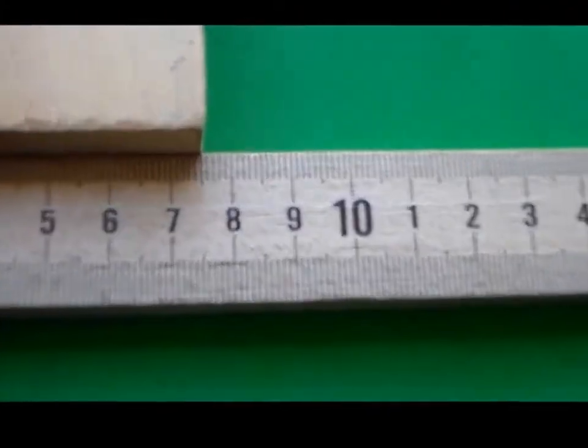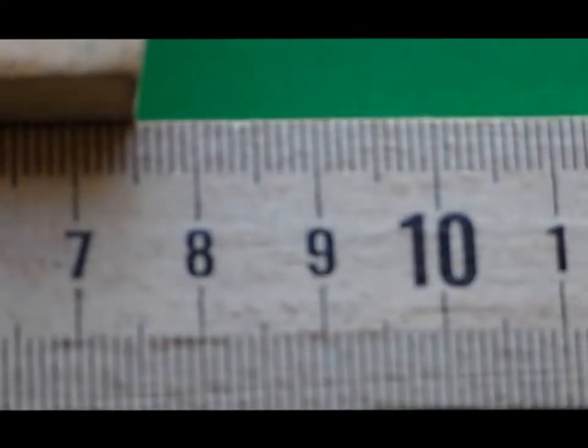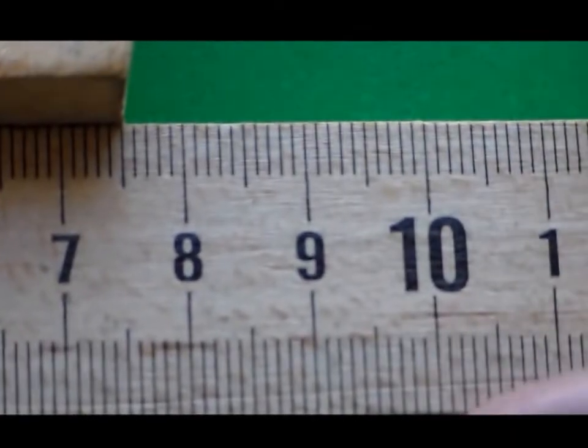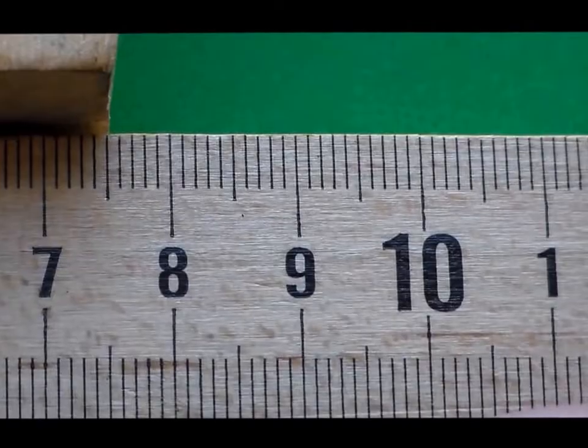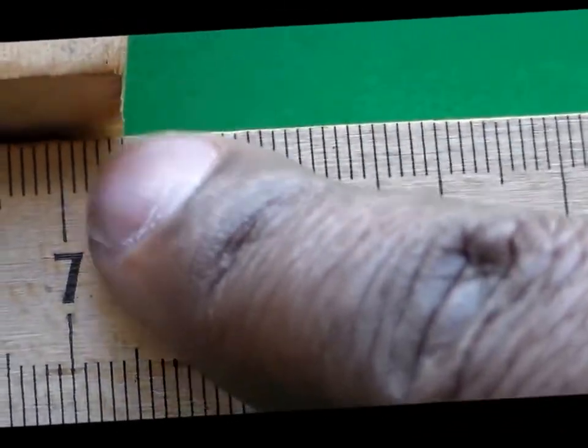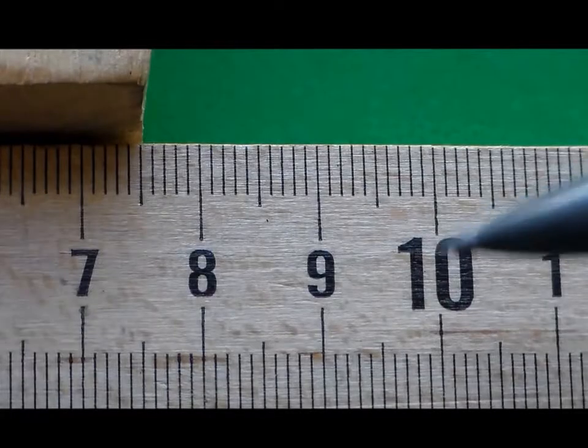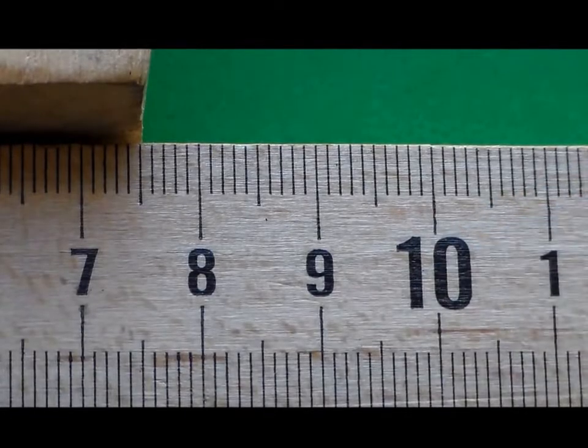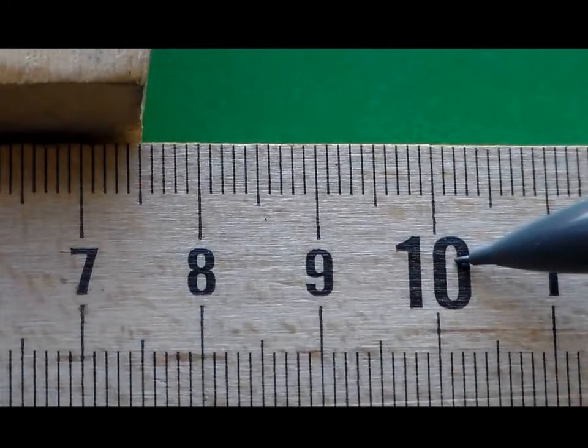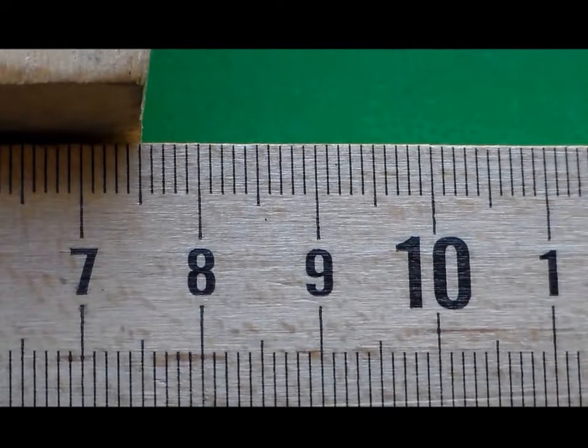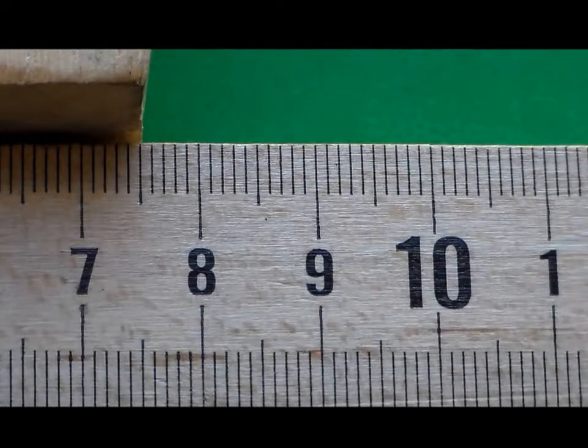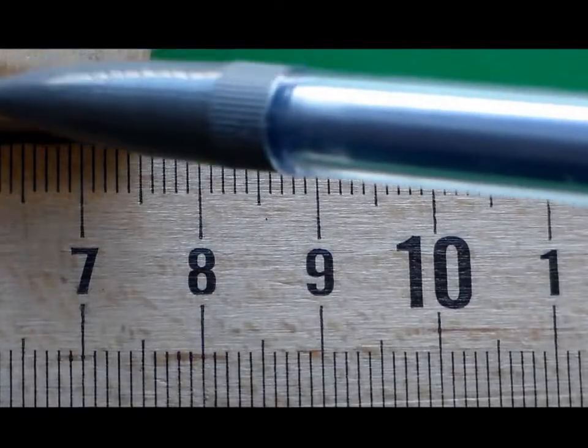get a better reading here on the block. So there we have the end of the block. If you notice on this meter stick, we have the number 10 here and then 11. What this is saying is that this is 10 centimeters, this becomes 11 centimeters, and so on and so forth.